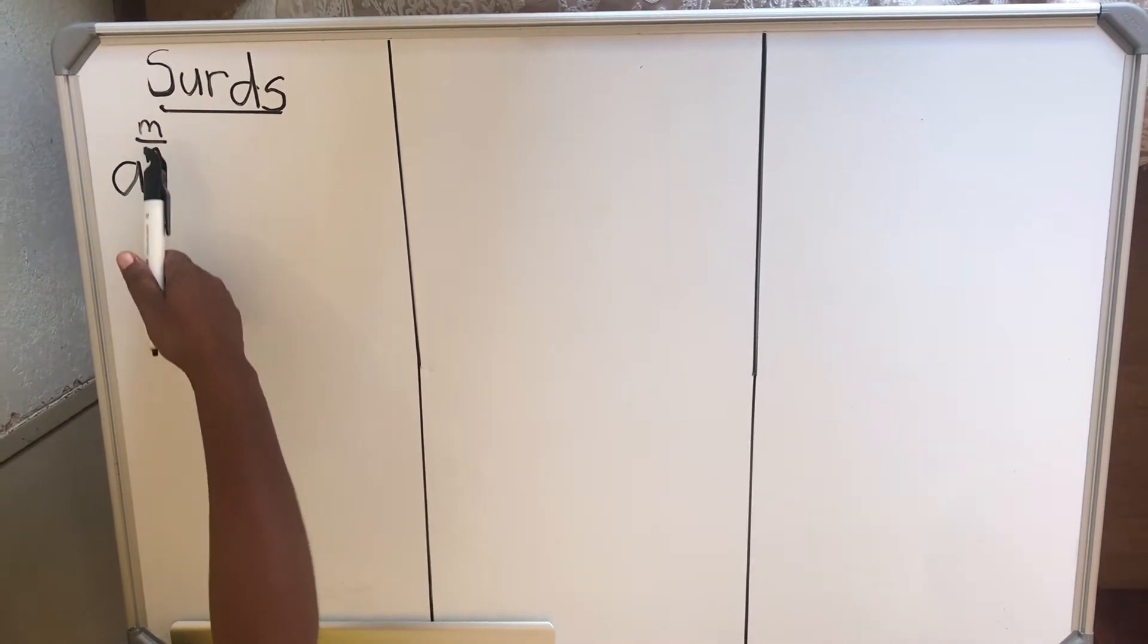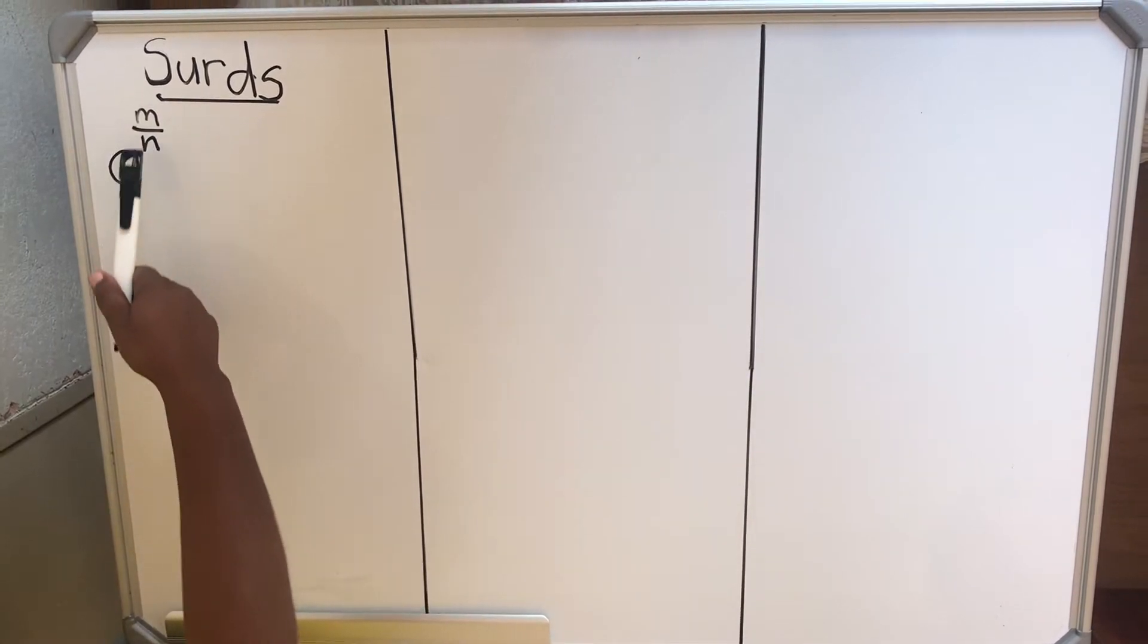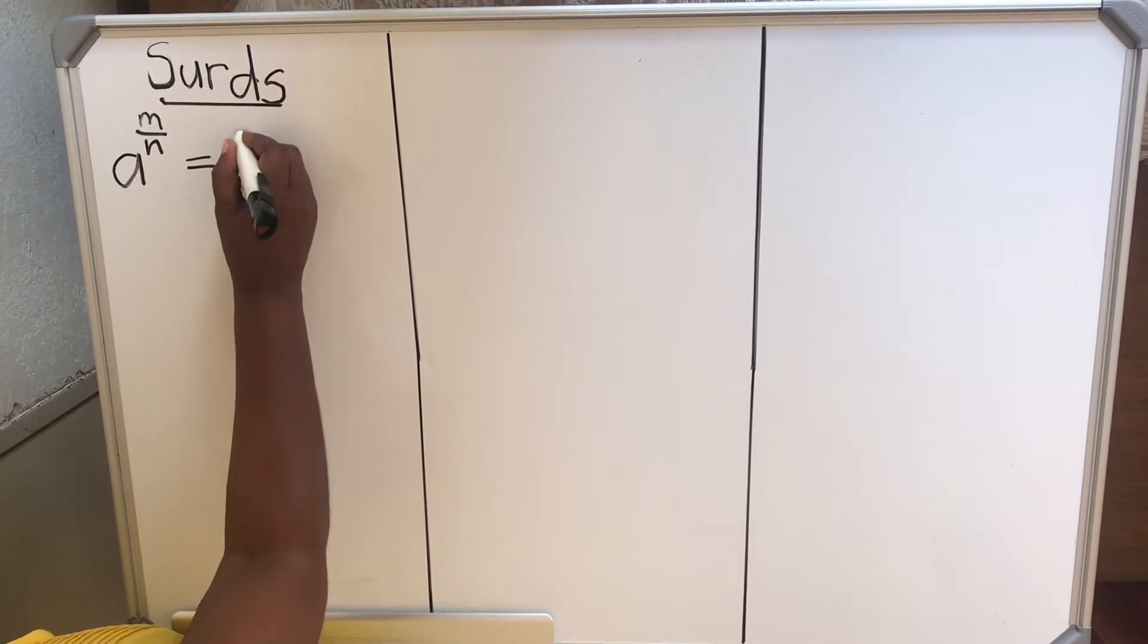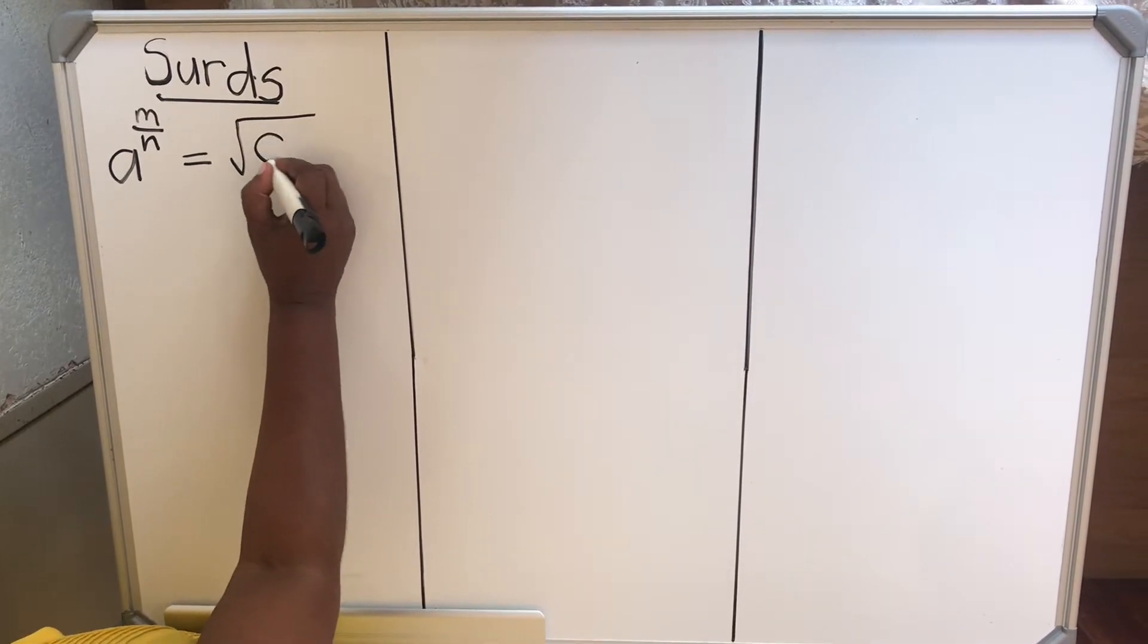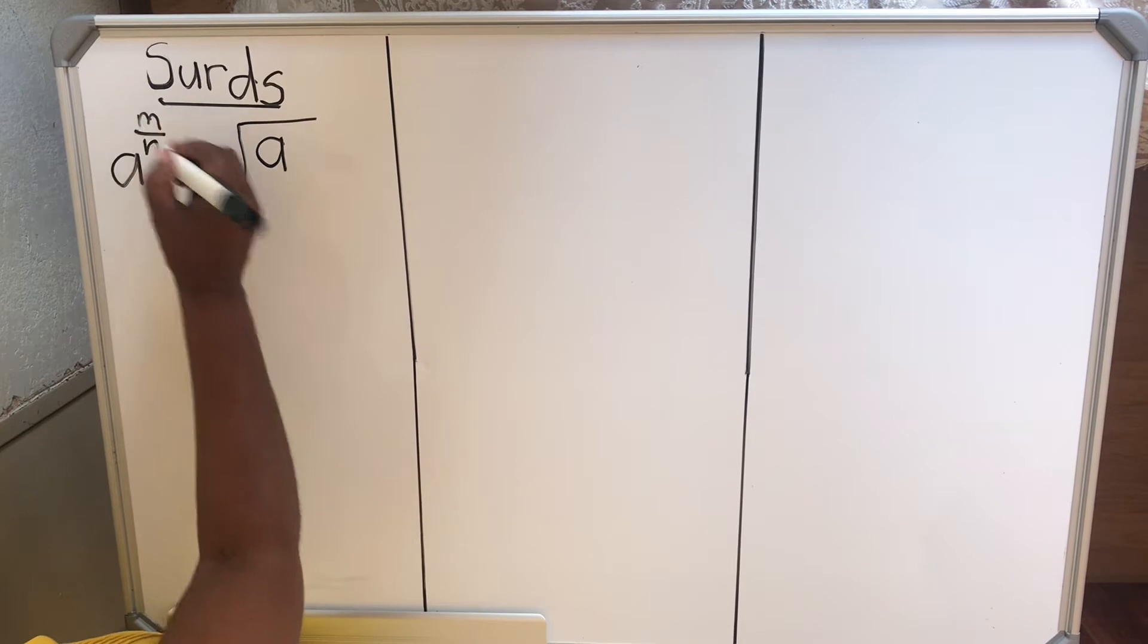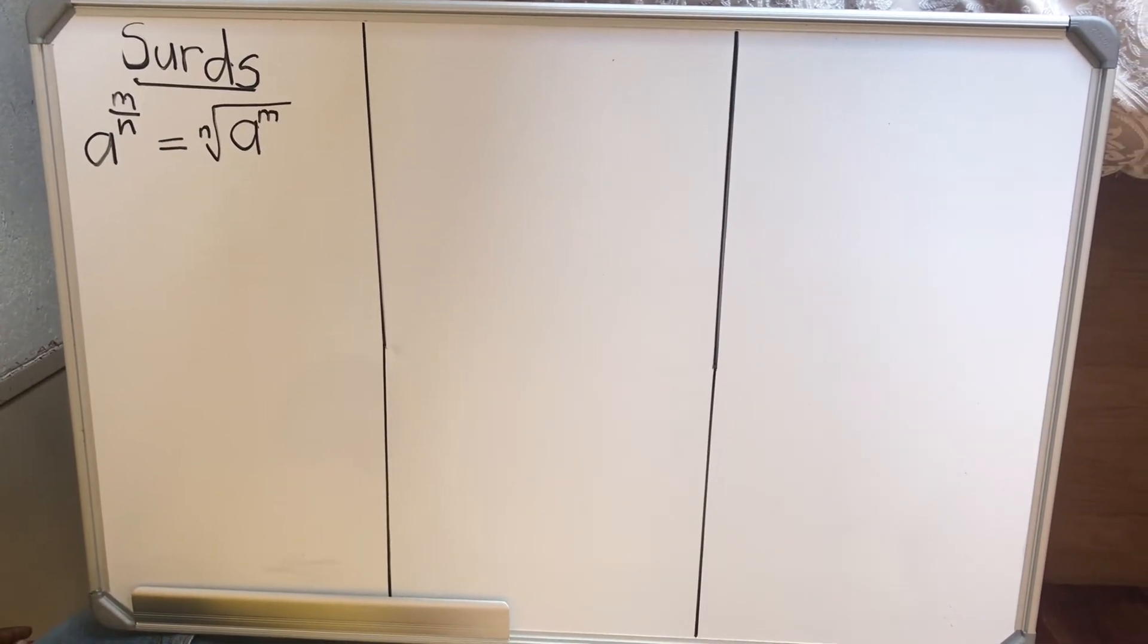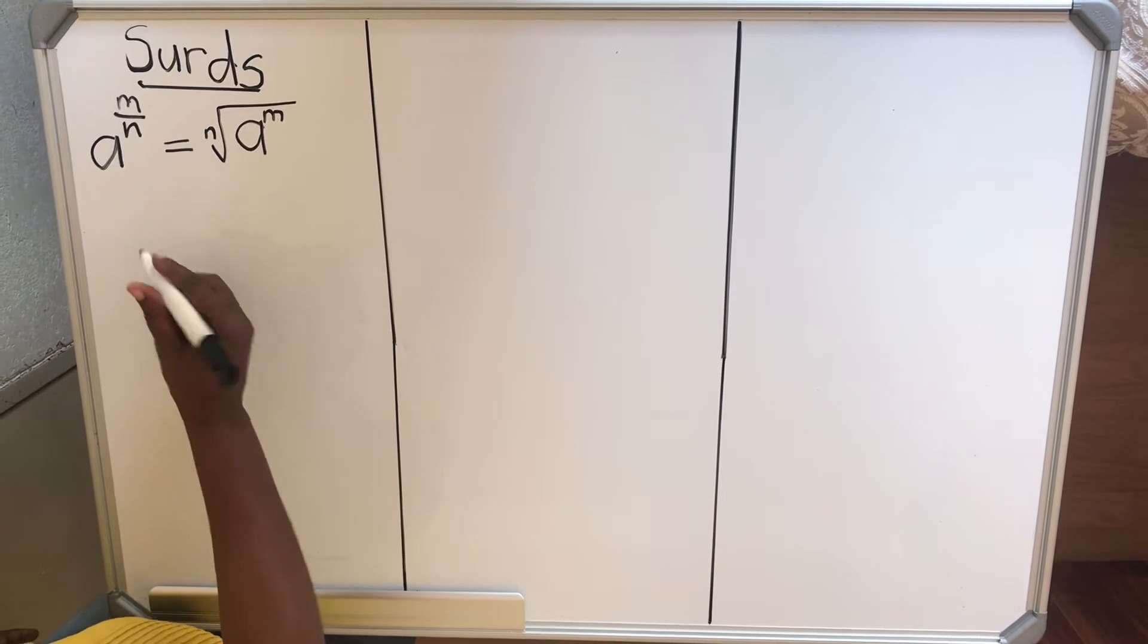The base is A and the exponent is in a fraction form. So when an exponent is in a fraction form, it can be written in a surd form. When you write it, you write the radical sign and then the base, and then the numerator of the exponent becomes the power, and the denominator becomes the index. So you can write any number in that form.